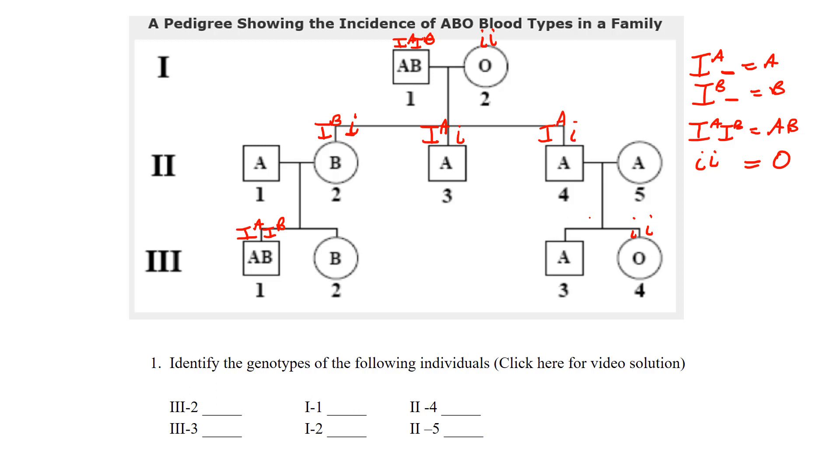Now this individual, two-five, know that they have to be an I^A, but take a look at their kid. They married in the family but they did have a kid that had O blood, and because of that we know that must be a little i, because both parents must contribute a recessive O allele for them to have a kid with O blood.